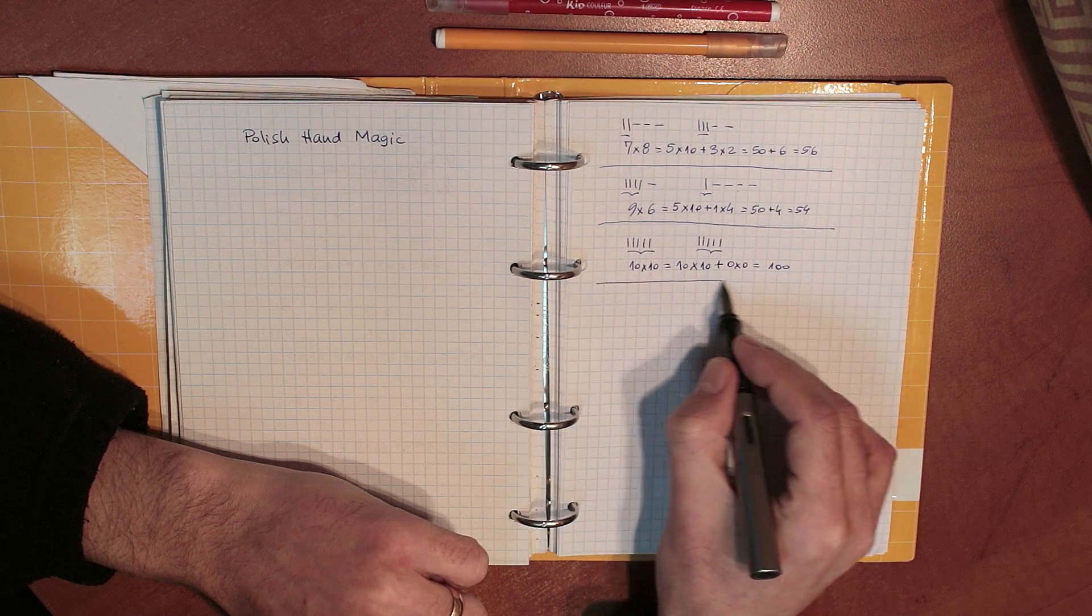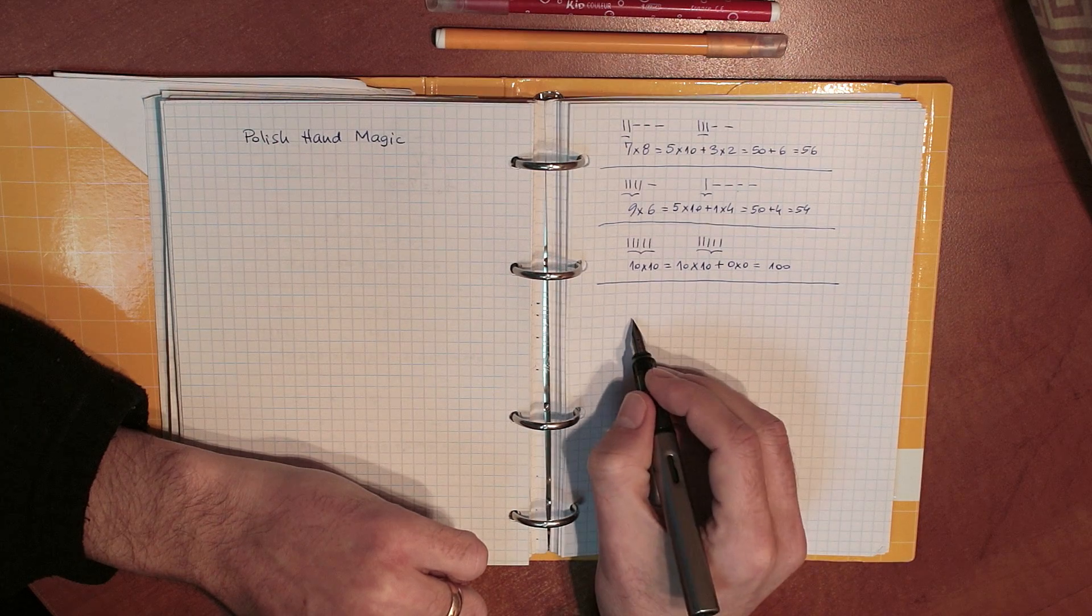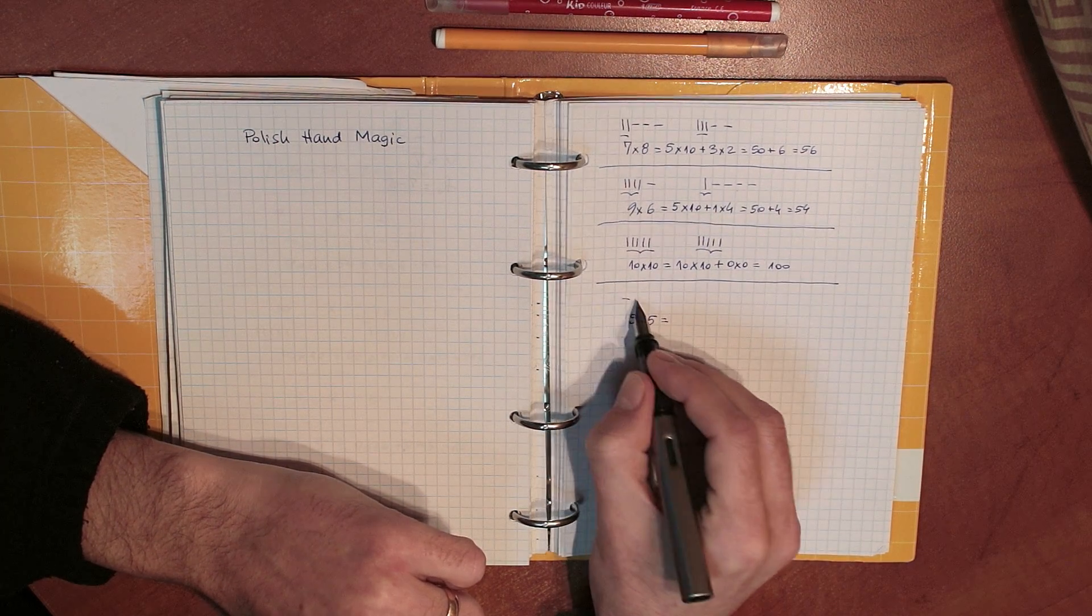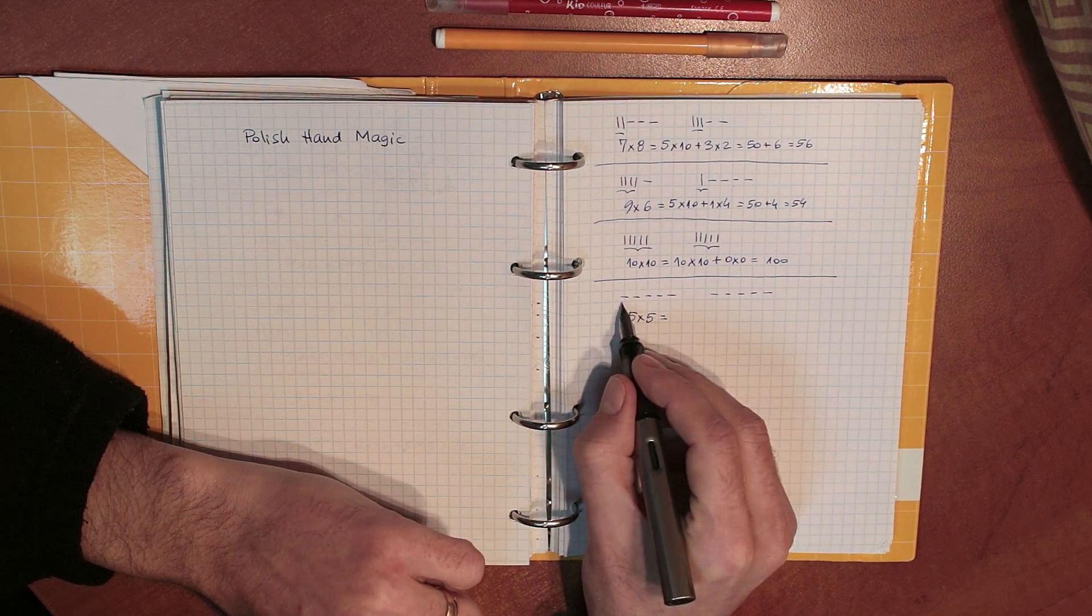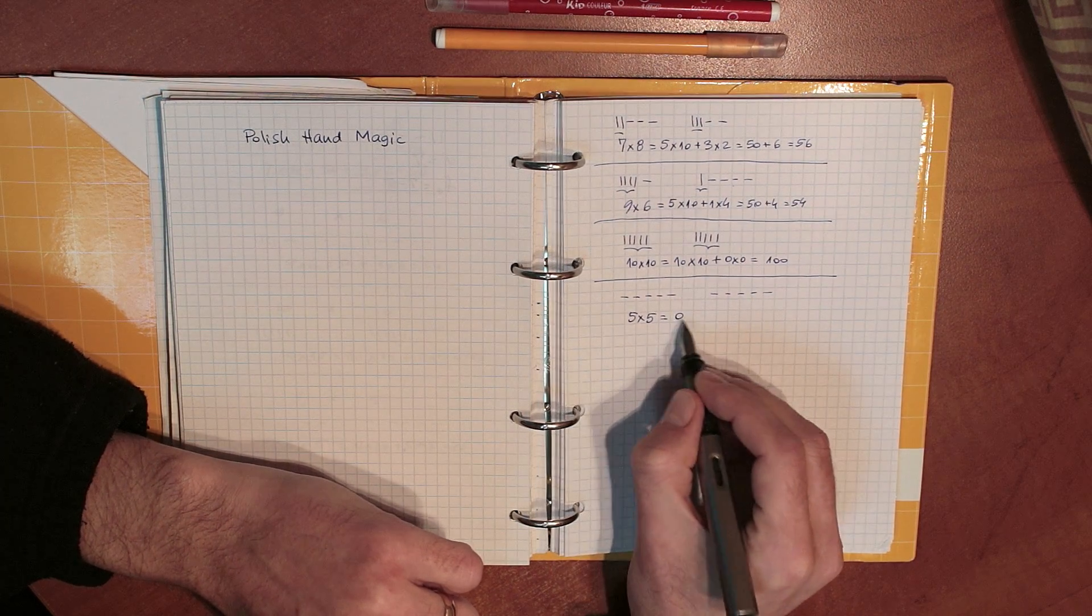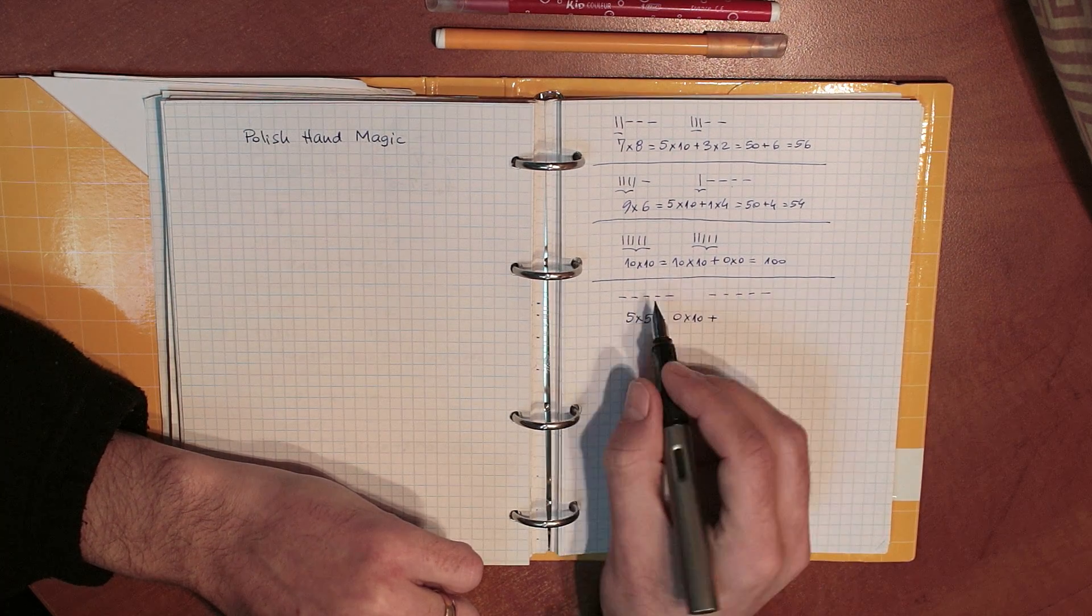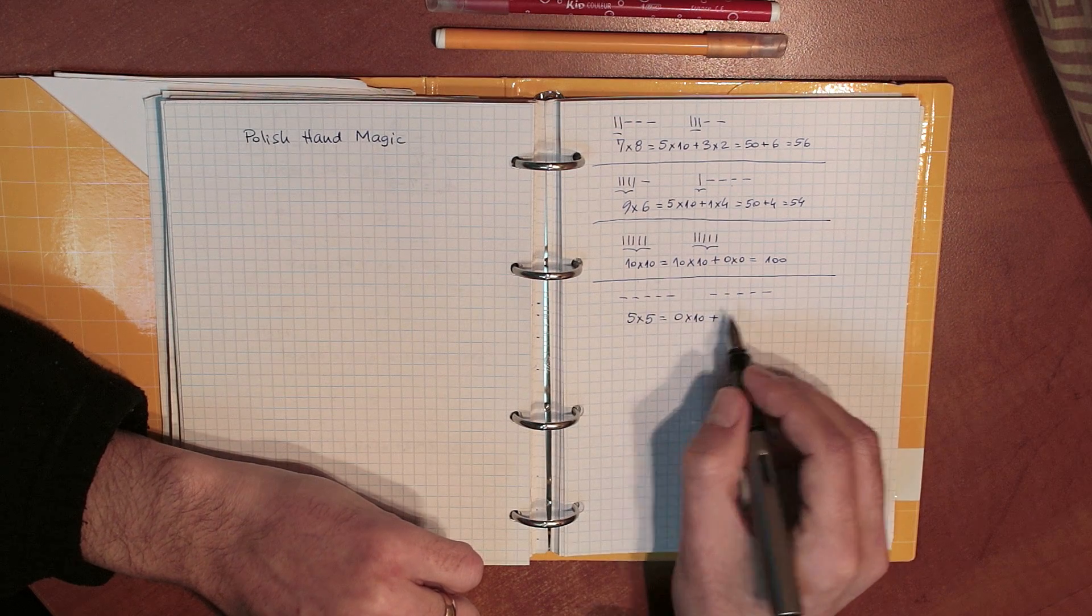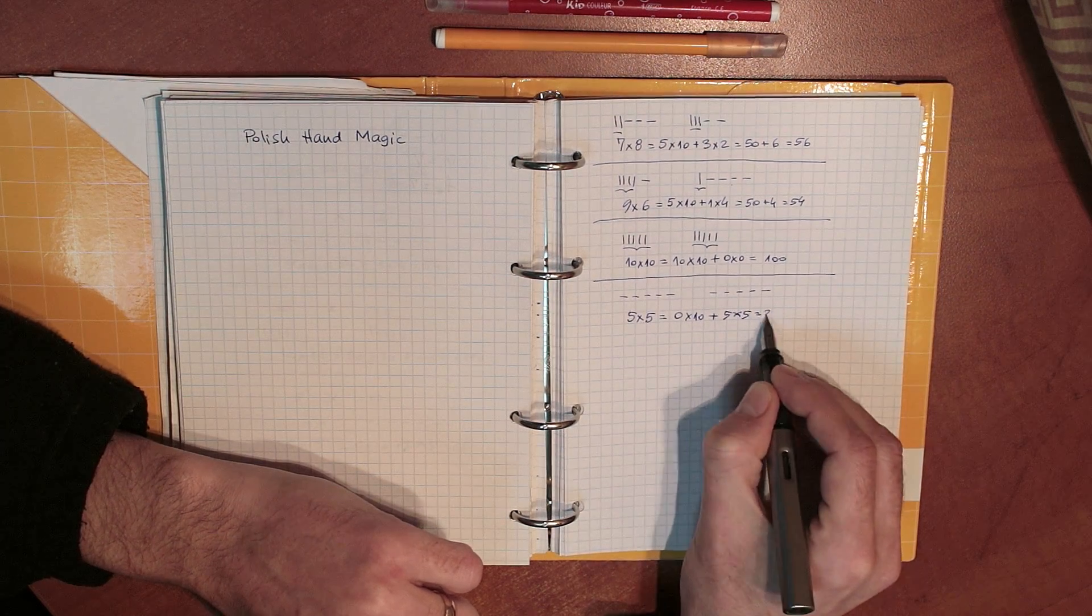Let's do one more where it looks like it might break down, but it doesn't really. Let's do 5 times 5. For 5, I have all of my 5 fingers lowered, and again, the same here. I count the total number of raised fingers on my two hands, which is 0. So that's the number of 10s, which looks wrong. But then I multiply this 5 by this 5, because all of them are lowered, and I get, obviously, 5 times 5, which is correct.